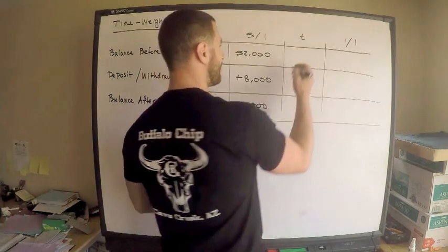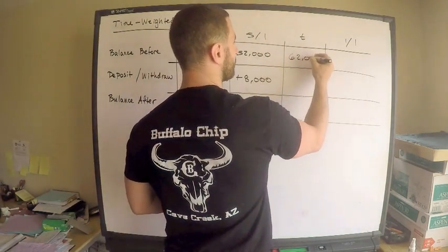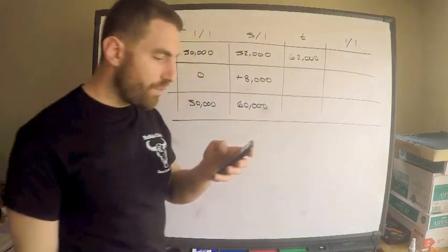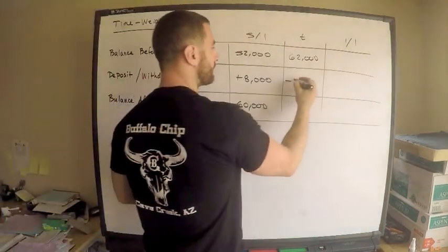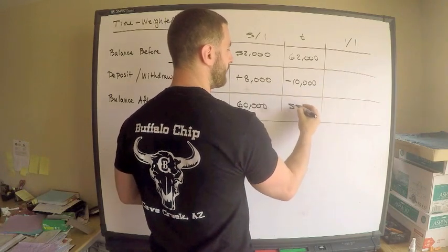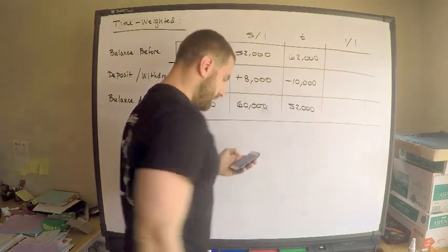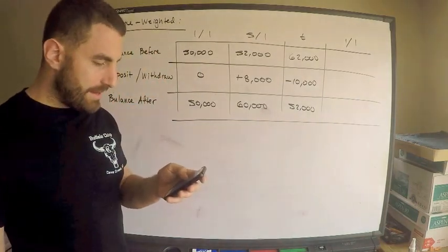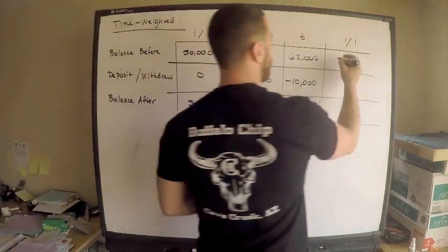I make a withdrawal of $10,000. This is going to be $52,000, and then at the end of the year it's $55,000.